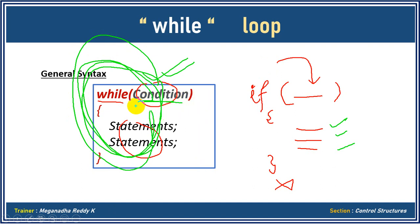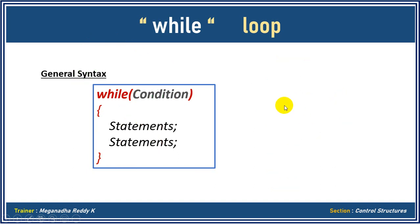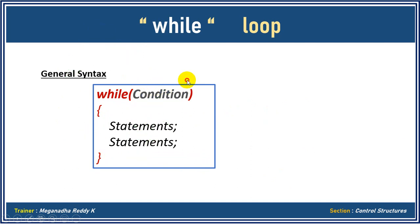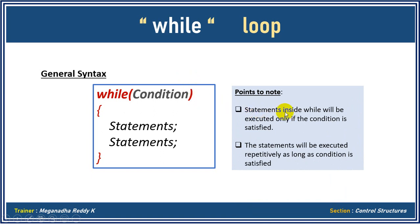That's why we use the term 'while loop', whereas you should not use the term 'loop' for an 'if' condition — if the statements are true, it'll just execute once. While the condition is true, the statements will be executed, it'll come back, check the condition, execute again, and when the condition fails, it'll stop executing. The statements inside while will be executed only if the condition is satisfied, and they will be executed repetitively as long as the condition is satisfied. Once you see an example, you'll get a clear idea.